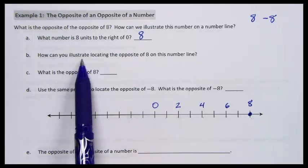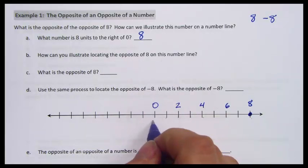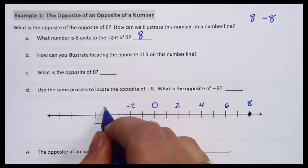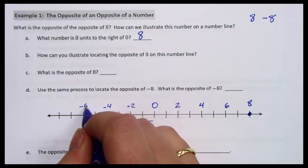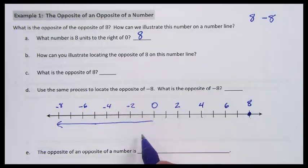If I locate the opposite of 8 on this number line, I'm going to go in the opposite direction, -2, -4, -6, -8, 8 units in the opposite direction.